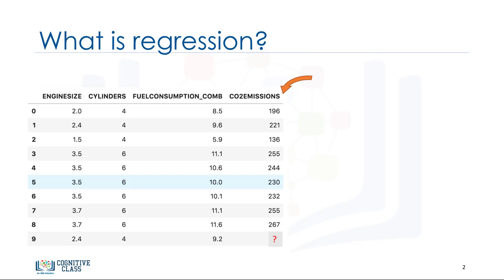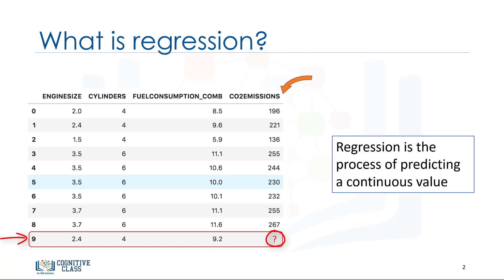Let's assume we have some historical data from different cars, and assume that a car such as in row 9 has not been manufactured yet, but we're interested in estimating its approximate CO2 emission after production. Is it possible? We can use regression methods to predict a continuous value such as CO2 emission using some other variables.